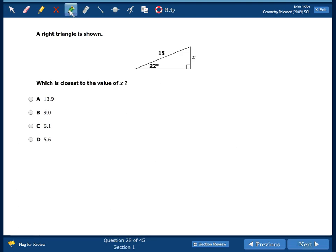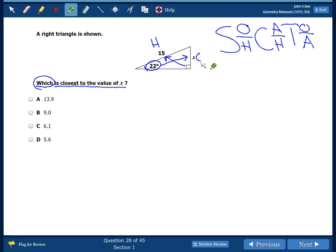So for this problem, our keyword is which is closest to the value of x. So we see we have an angle. Just like in one problem we've already done, we're going to use SOH CAH TOA, trigonometry. So we label our triangle. There's the hypotenuse, opposite, and adjacent. We have the hypotenuse and the opposite. We don't have the adjacent. So that means we're going to use sine.